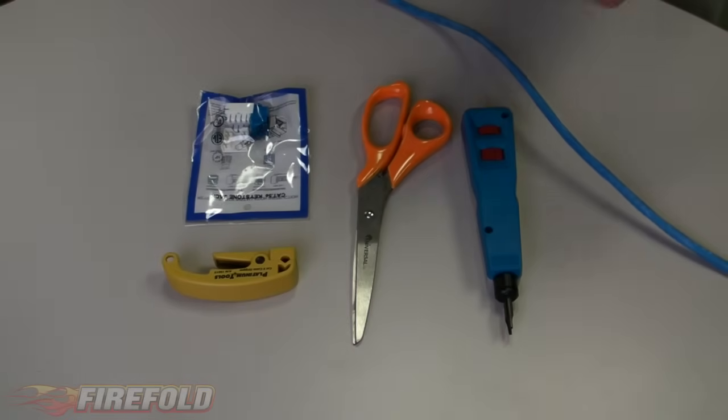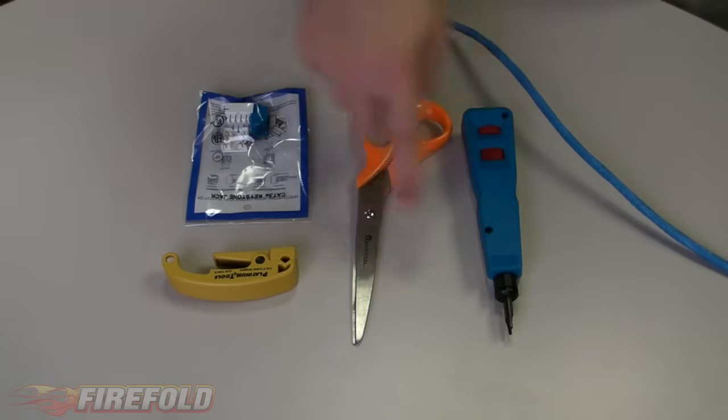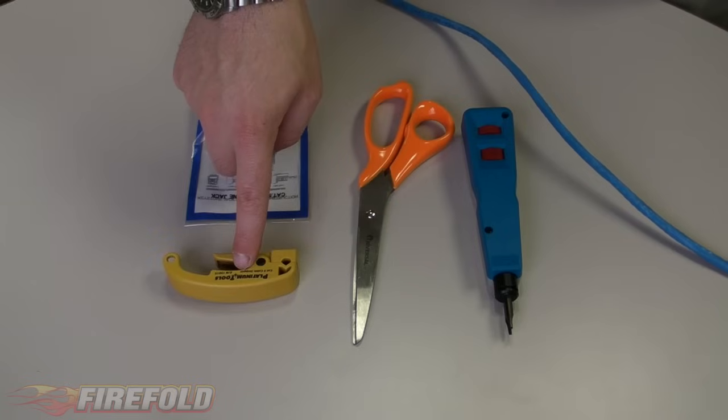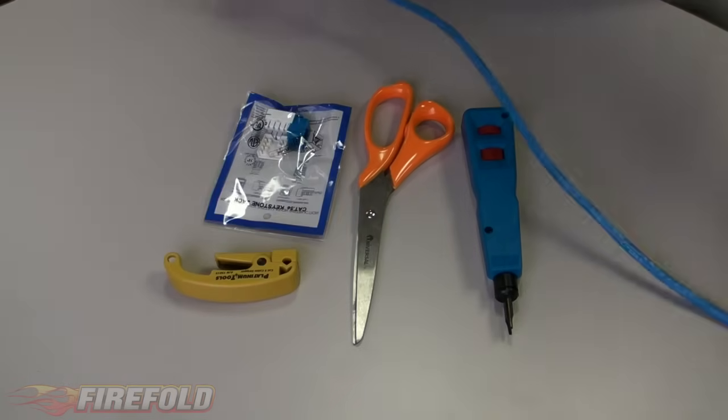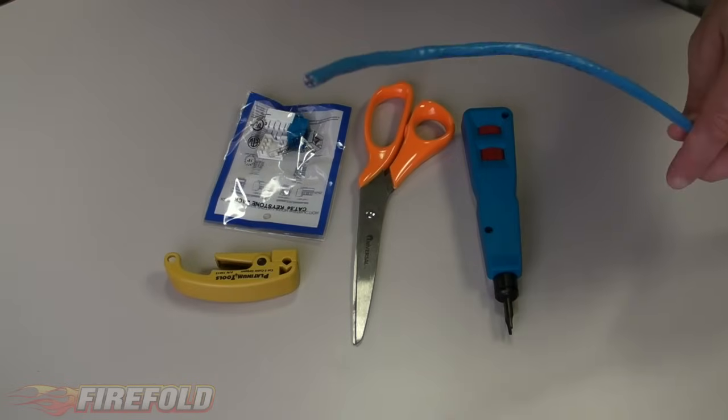As you can see here on the table, we have a variety of assorted tools. We have our punch down tool, a pair of sharp scissors, a Cat5 cable stripper, our Cat5 Keystone Jack, and of course, some Cat5 cable.